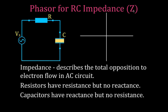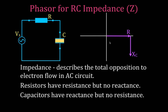For the impedance phasor diagram: because the resistor is in phase with the current, we draw the resistance vector along the positive x-axis. Because the voltage across the capacitor lags the current, we draw the capacitive reactance XC along the negative y-axis. Adding those two vectors using the head-to-tail method, the hypotenuse of the resulting right triangle is Z — the impedance of the RC circuit.